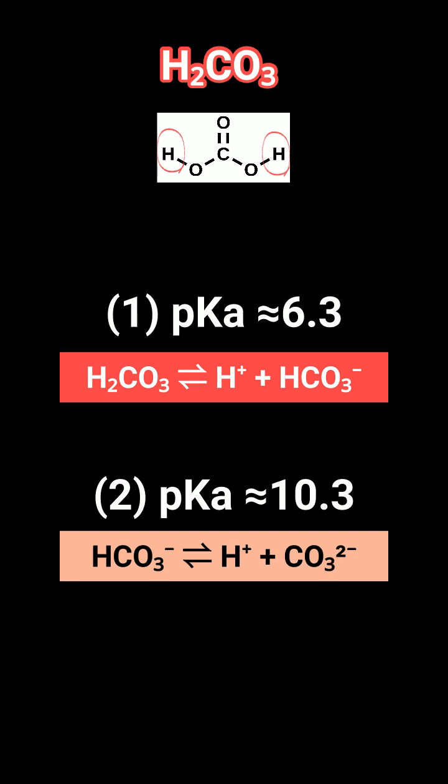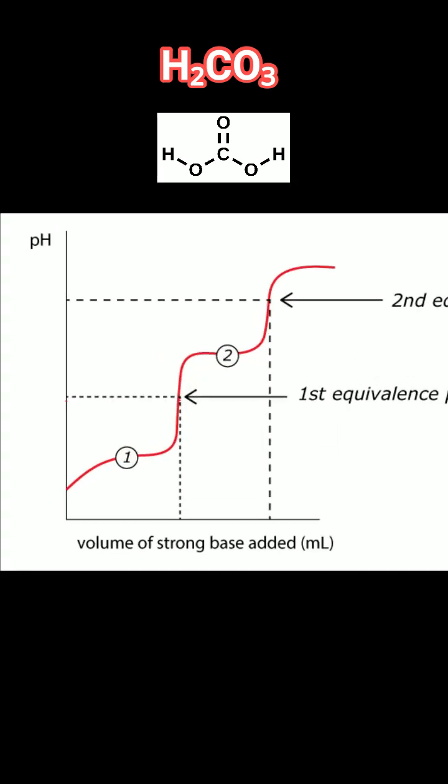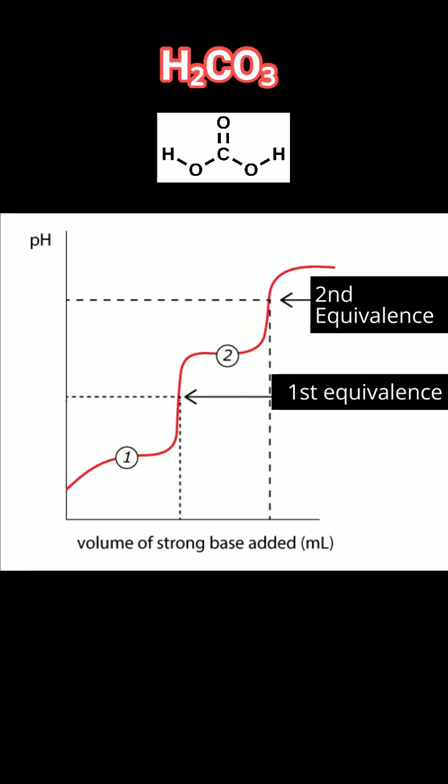Now let's look at what the titration curve of carbonic acid would actually look like. You'd see two buffer regions, and two equivalence points, one for each proton lost. As you slowly add a strong base, like sodium hydroxide, here's what's happening.